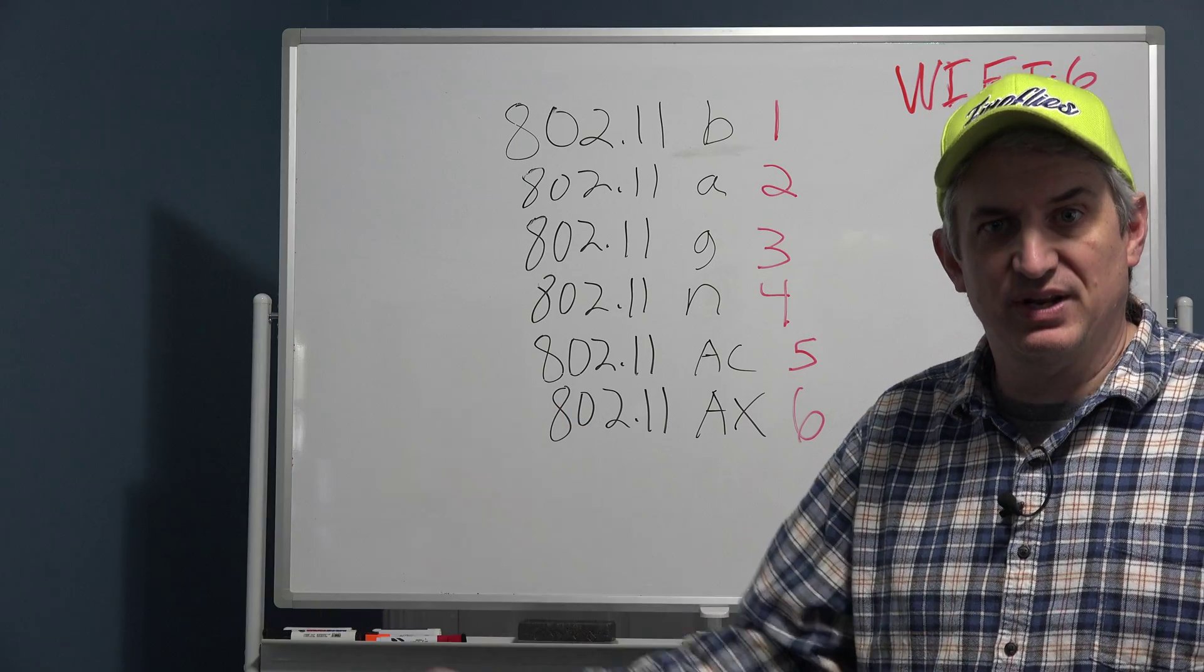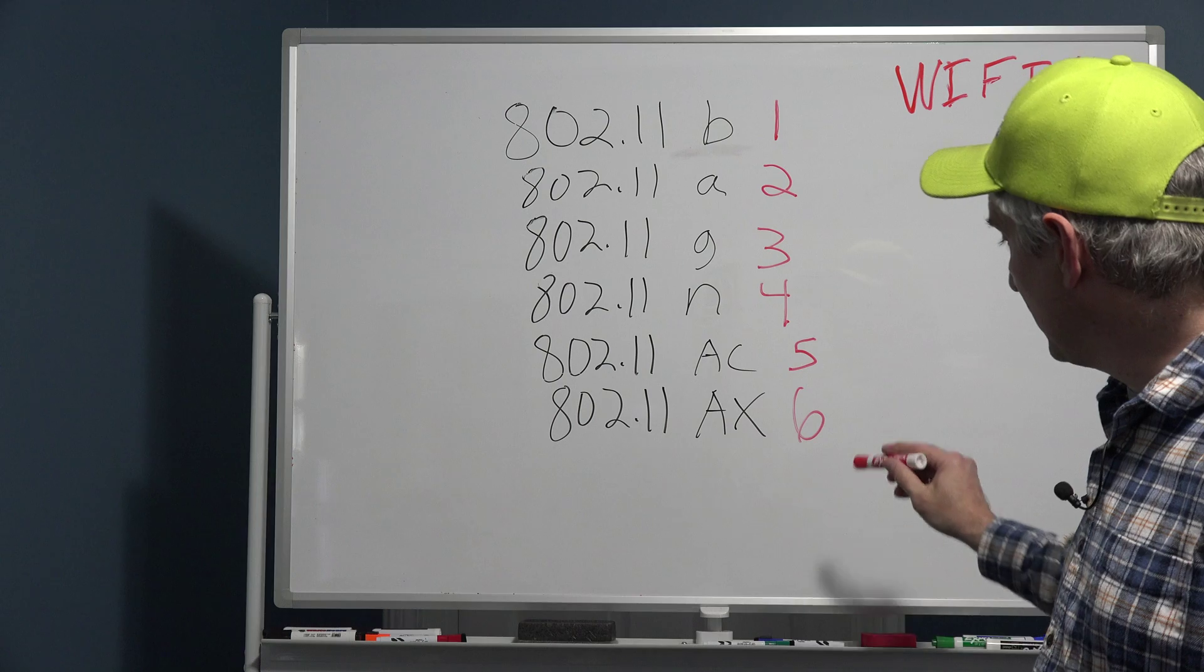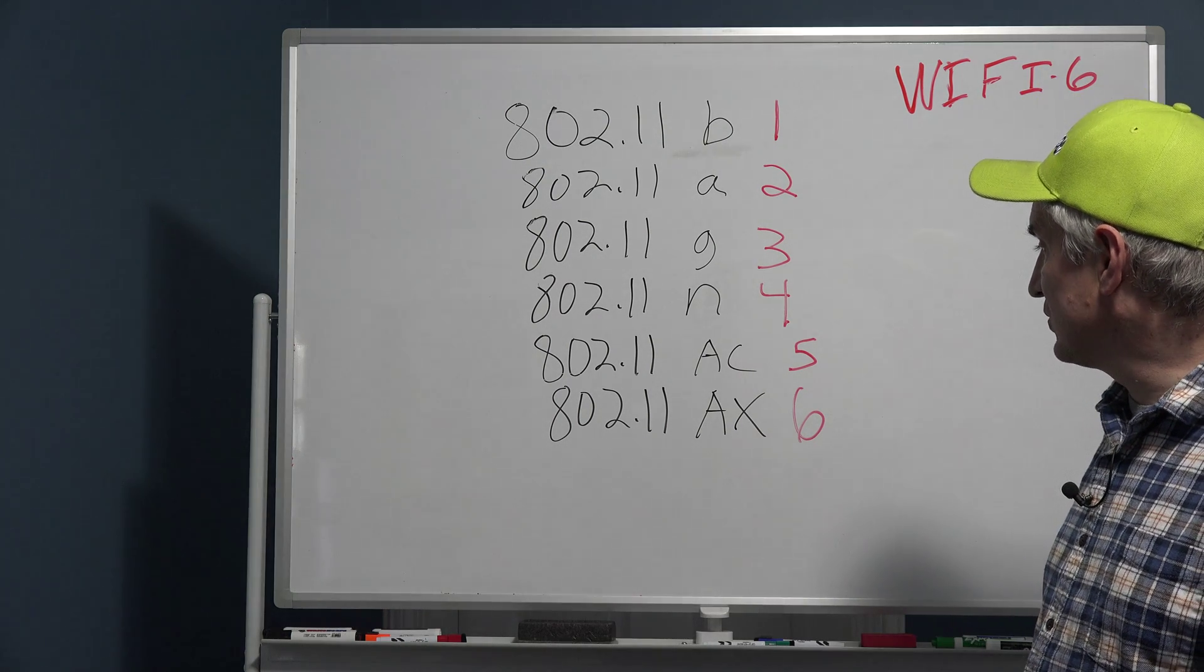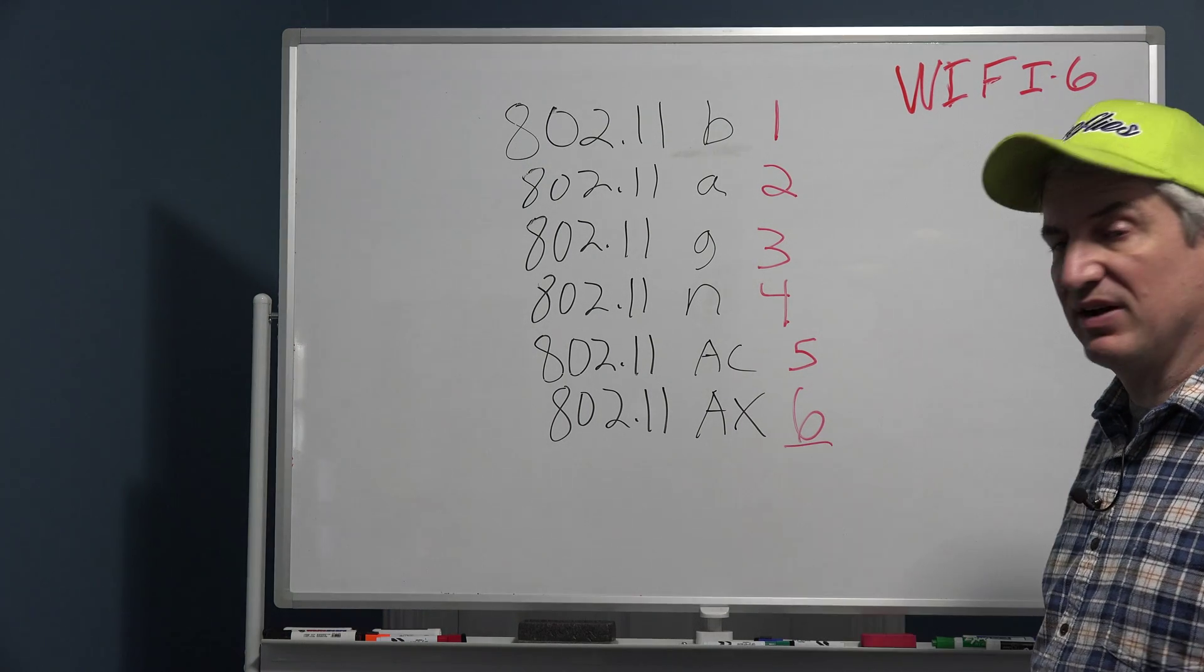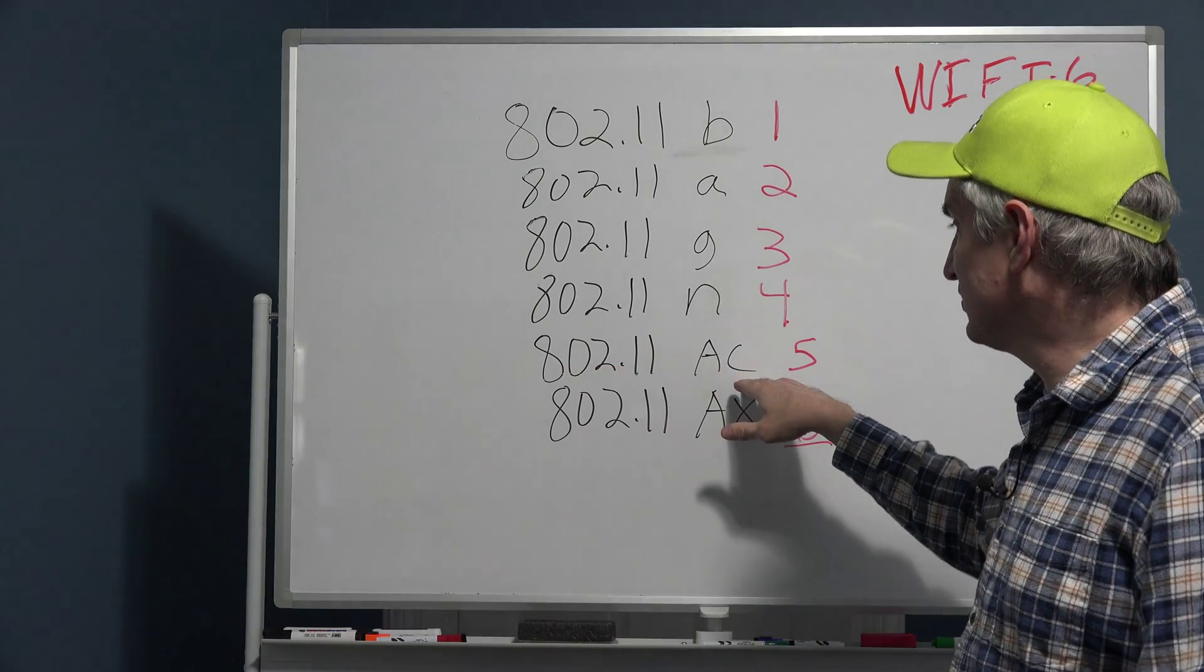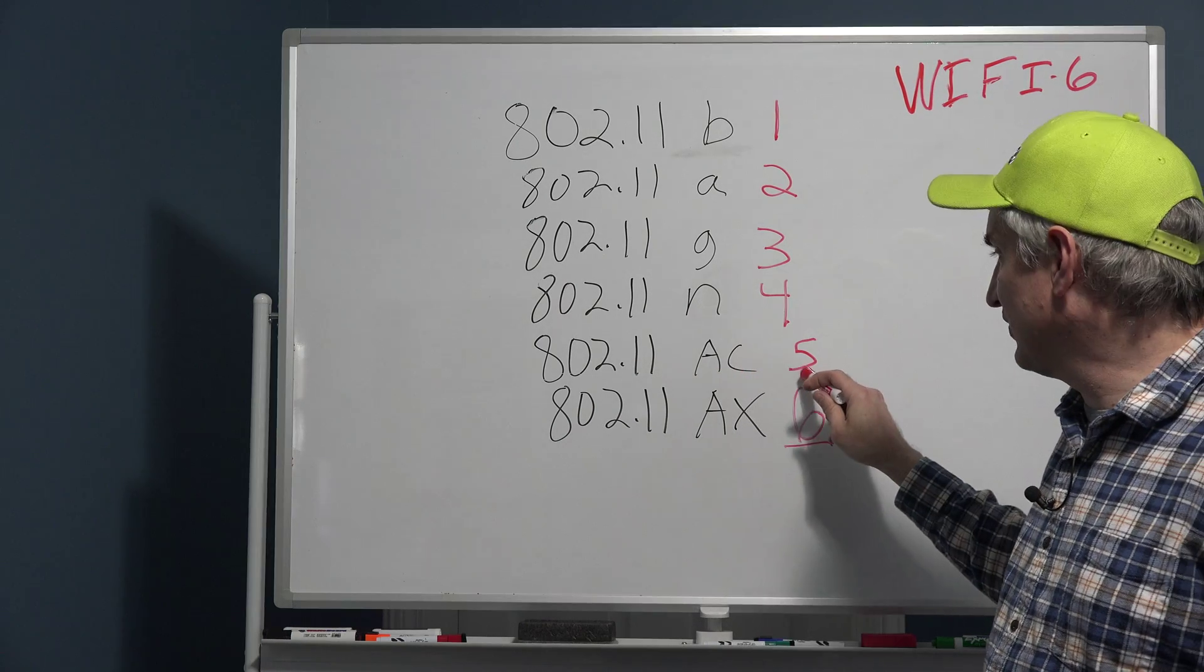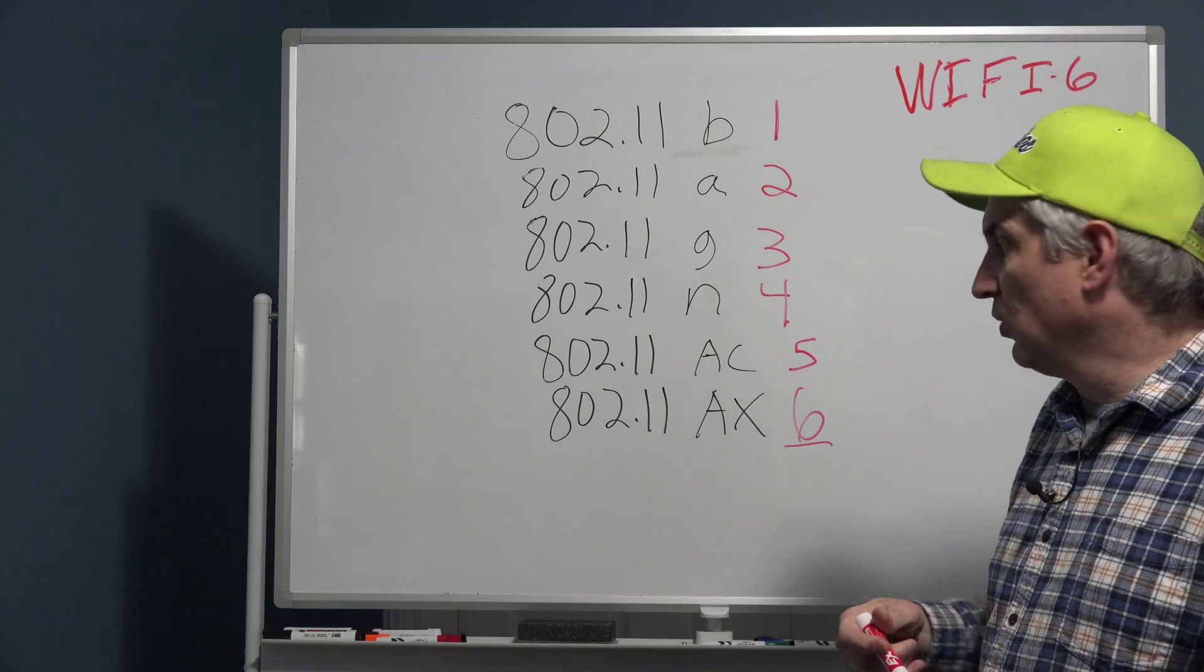All you have to do is remember the number. So the very latest WiFi is WiFi 6. And once AC fades into the darkness, because people are still calling this wireless AC, they're not calling it WiFi 5, once AC goes away you're not really going to hear 802.11ax.